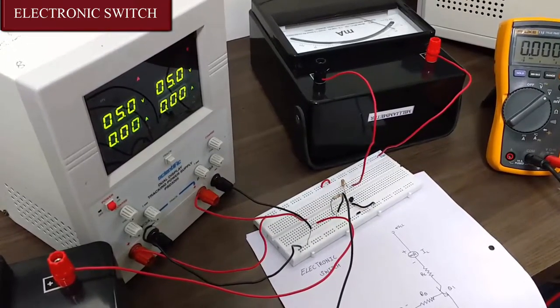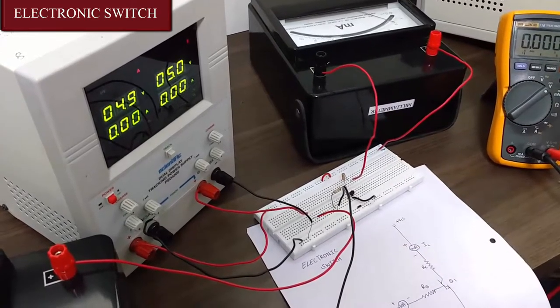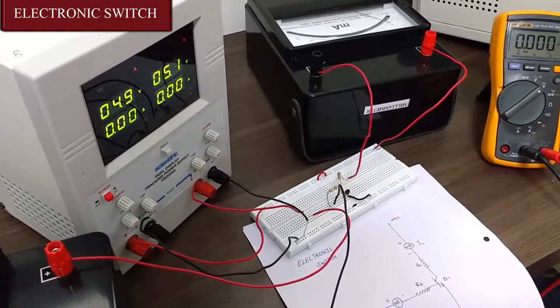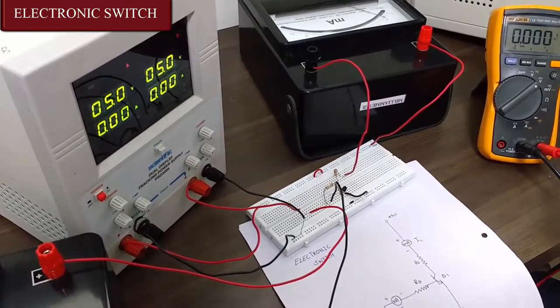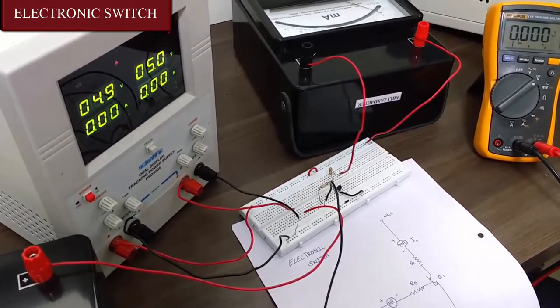So now the inputs are applied. As you can see both the power supplies are giving 5V. That means VS is 5V. So now our BJT is on.